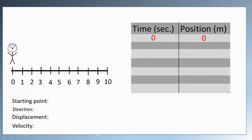So as you can see, there's four things we're going to be looking for. One is the starting point, direction, displacement, and velocity. And those four things will tell us a lot about what's happening.